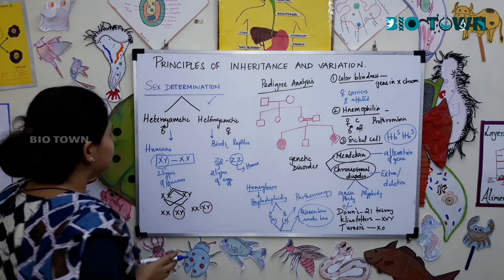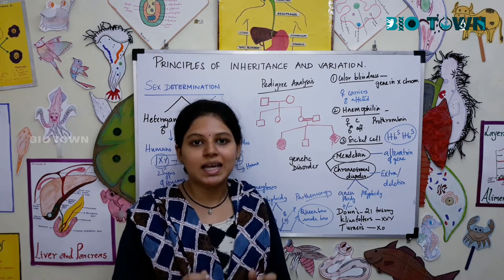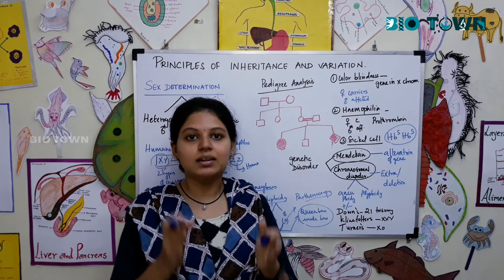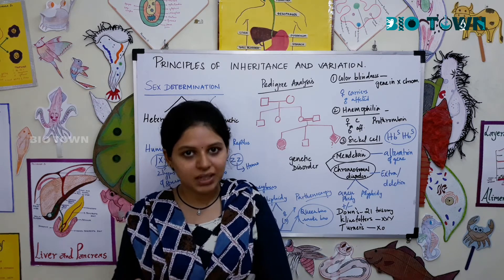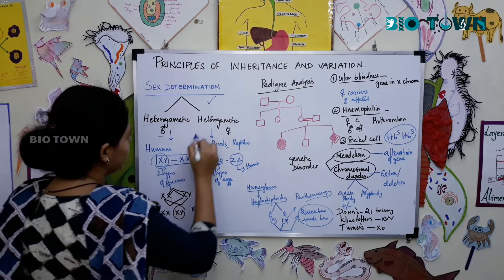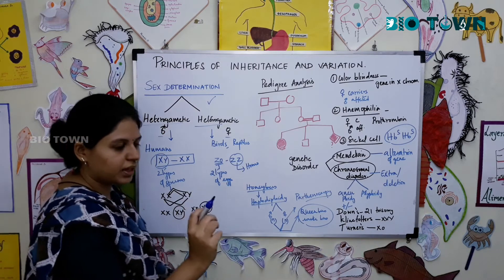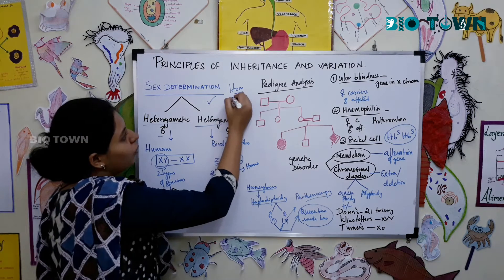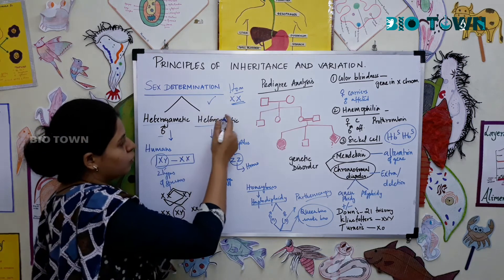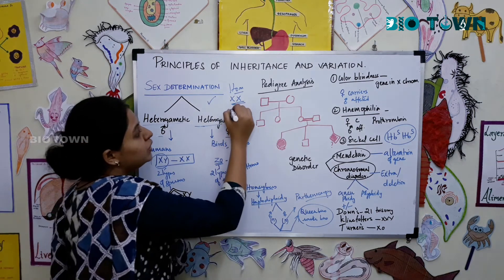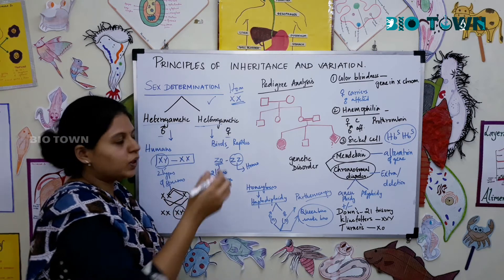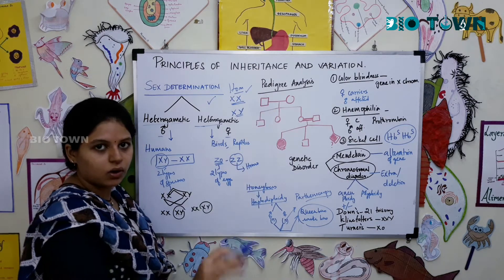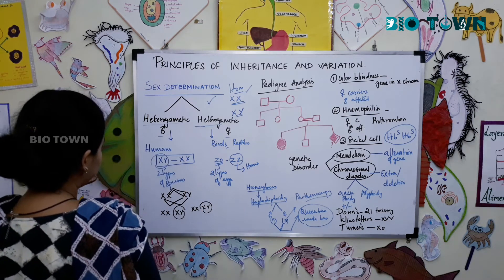First we will move on to sex determination — determining the sex of an individual and how chromosomes play a very important role in that. We have heterogametic and homogametic individuals. 'Homo' means similar — for example, females are homogametic, having two similar X chromosomes. Heterogametic individuals have different chromosomes in a pair; in males, one X and one Y chromosome.